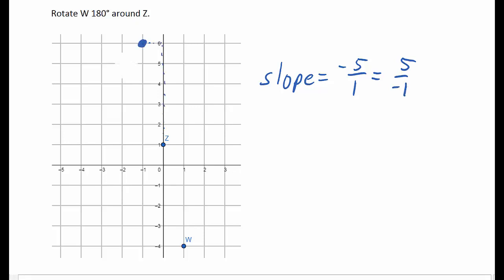Remember that negative 5 over 1 is equal to 5 over negative 1 because they both equal negative 5. So when we rotate W 180 degrees around Z, we end up at the point negative 1, 6.